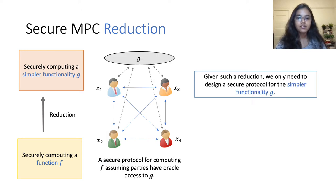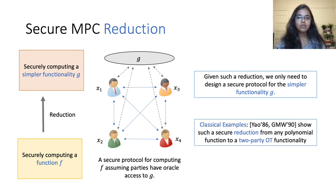Given such a reduction, the original task is now reduced to simply designing a secure protocol for the function g. Classical examples of protocols by Yao and Goldreich et al. can be viewed as secure reductions to the two-party oblivious transfer functionality.